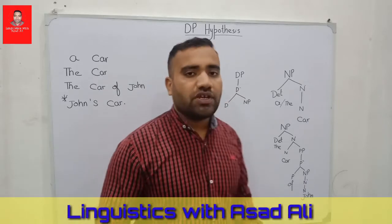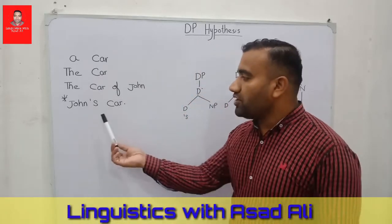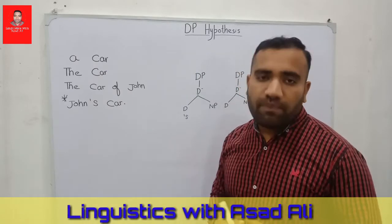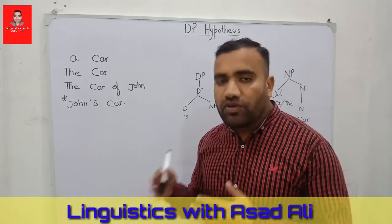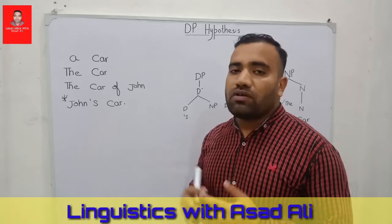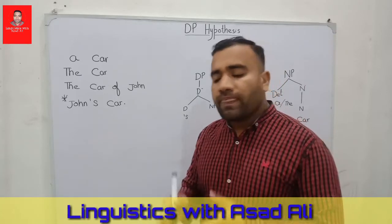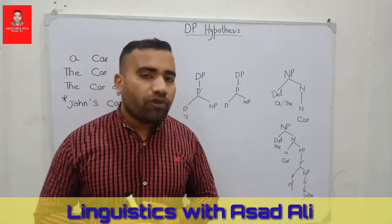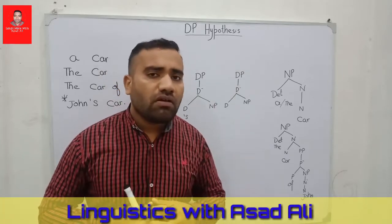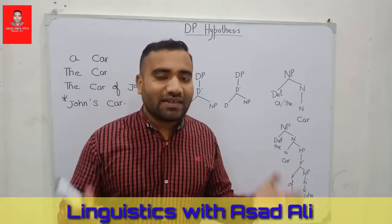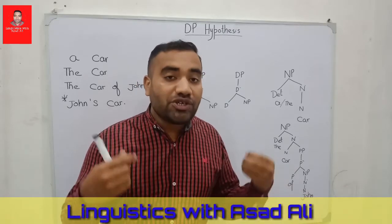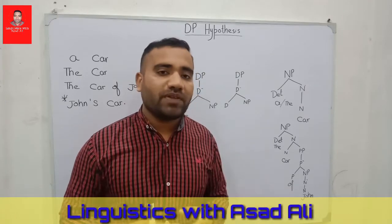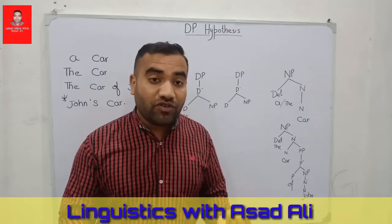But if we have the example 'John's car', what will be the solution? This is our core point in this video. We need to ask whether we require additional functional categories over NP. Our data tells us that we need a uniform structure for NP, and the structure of DP provides that solution. Let us see what the solution to this phenomenon is.